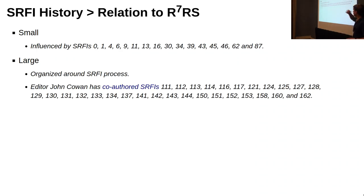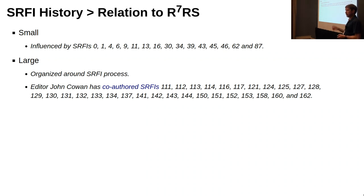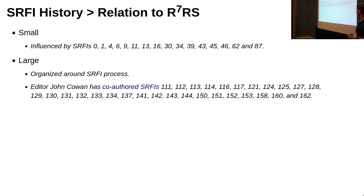In R7 small, if you look at the R7RS.pdf document, you can see all of these SRFIs referenced — SRFI 9, for example, was the record proposal largely accepted into the language. John Cowan is running R7RS large, the effort to make the larger version of the language. He has organized everything around the SRFI process, but without the plan to withdraw things at the end. John alone has co-authored all of these SRFIs, which is why the graph goes up so much since R7 small was finalized.